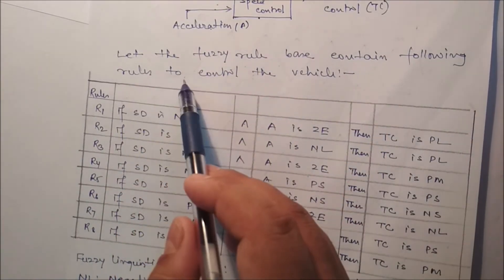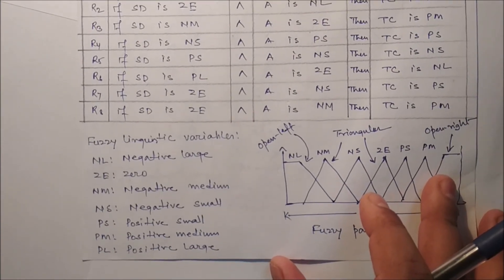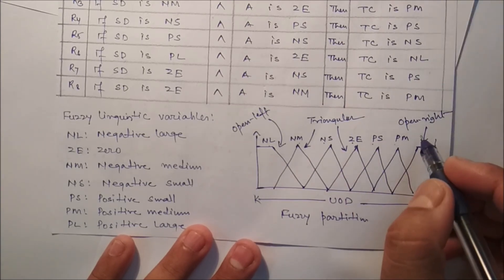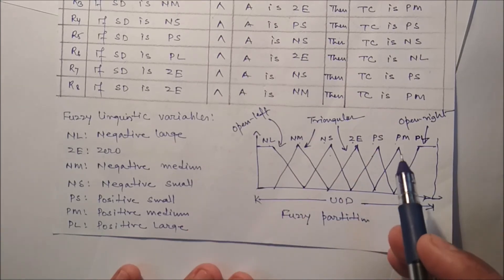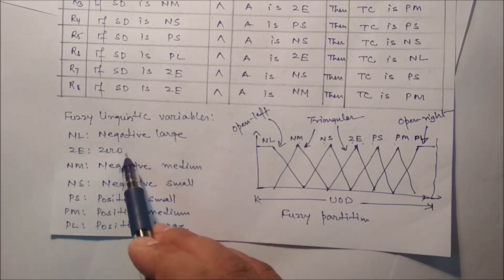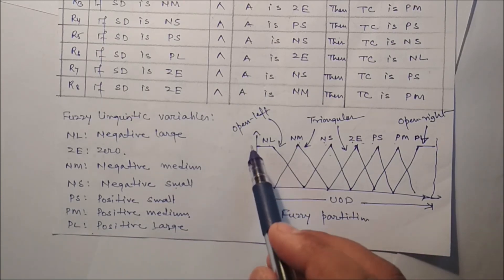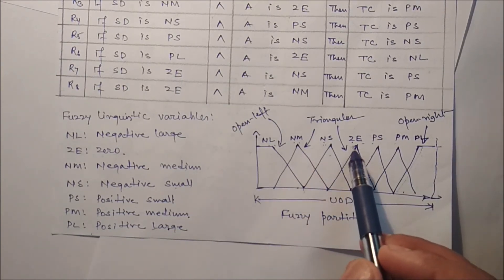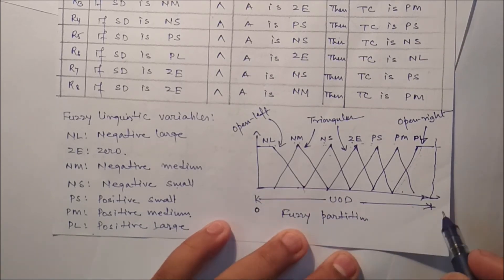The fuzzy rule base contains the following rules to control the vehicle. Looking at the fuzzy partition, we have: NL (negative large), NM (negative medium), NS (negative small), GE (zero), PS (positive small), PM (positive medium), and PL (positive large) — seven fuzzy partitions in total. NL is an open-left fuzzy set, PL is an open-right fuzzy set, and the remaining sets NM, NS, GE, PS, PM are all triangular fuzzy sets. The universe of discourse x goes from 0 to 240.